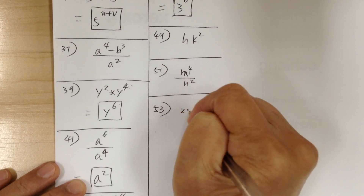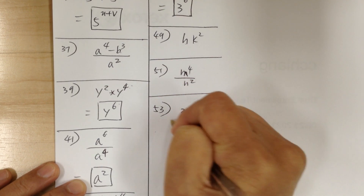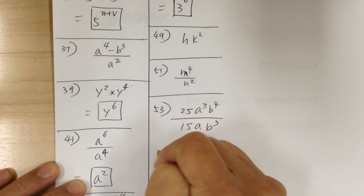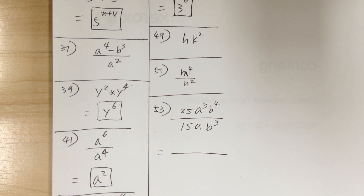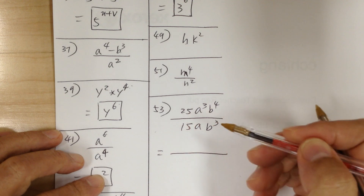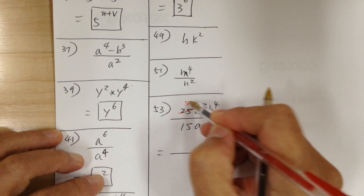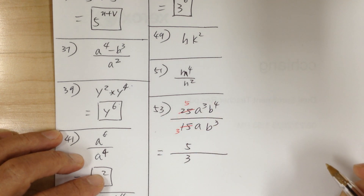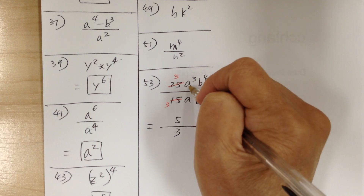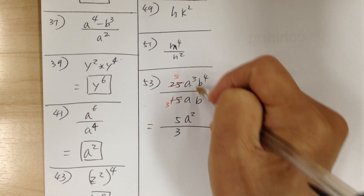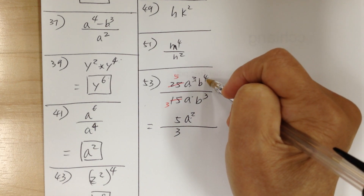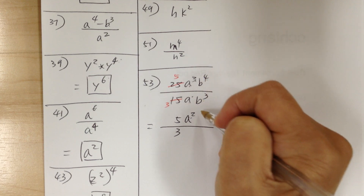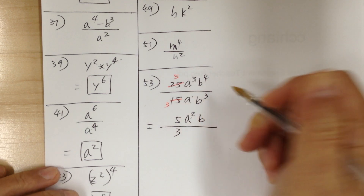Number 53, you have 25a cubed b to the 4 over 15ab cubed. Let's do the numbers and go down the alphabet. 25 and 15 — divide by 5 — you get 5 and 3, so the numbers give you 5 over 3. Then a cubed over a gives you a squared, since 3 minus 1 is 2. And b to the 4 over b cubed gives you b to the 1, but you don't write 1 as an exponent — just b.